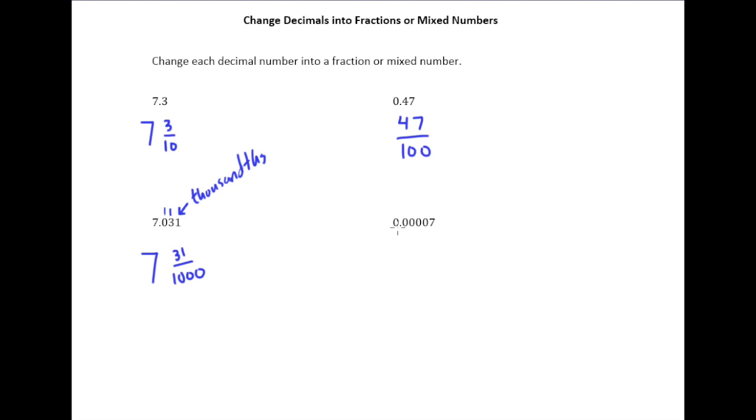And then finally, over here, this is again just a decimal number, not a mixed number, because there is no whole part. So what do we have? Tenths, hundredths, thousandths, ten thousandths. This 7 is in the hundred thousandths place.